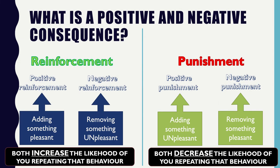Those positive and negative consequences are often classified as reinforcement and punishment. Edward Thorndyke's original theory was built upon by Burrhus Skinner, who noticed that it wasn't just two consequential actions — in actual fact he discovered there were two different types of reinforcement and two different types of punishment, all of which are important to your understanding of operant conditioning.